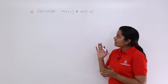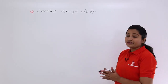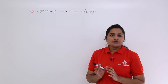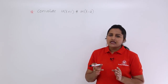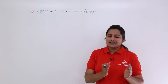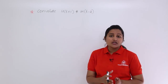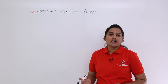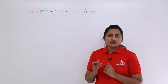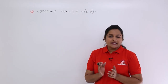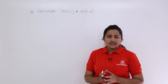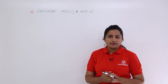The problem is: convolute u(t+1) with r(t-2). For this type of problem you can choose two methods — either the actual formula method or the graphical/image method, which we already discussed in previous classes. However, both methods give a very long solution, and in technical exams like GATE they consume too much time.